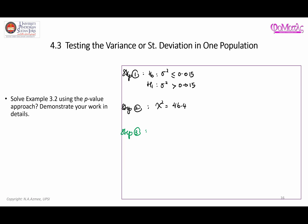To obtain the p-value, I sketch the chi-square distribution and place the position of 46.4. I need to find the probability of getting a chi-square value of 46.4 or larger — that is, the area from 46.4 to the right. So I want P(χ² ≥ 46.4), which equals the area given by that right-tail region.